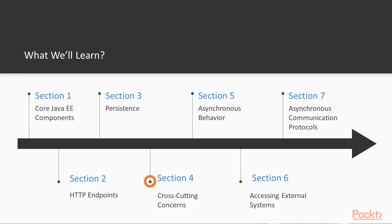In section three we're going to see how we can use persistence and access databases in our application. Section four will be about cross-cutting concerns such as interceptors. Section five is about asynchronous behavior — how we can make our business processes asynchronous. Section six will be about accessing external systems, and the seventh section will be about asynchronous communication protocols.